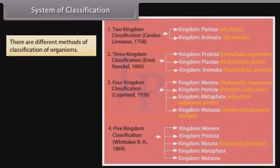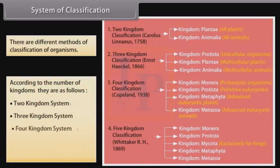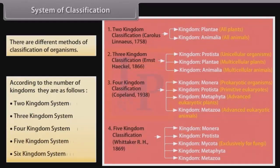There are different methods of classification of organisms. According to the number of kingdoms, they are as follows: Two Kingdoms System, Three Kingdoms System, Four Kingdoms System, Five Kingdoms System, and Six Kingdoms System.